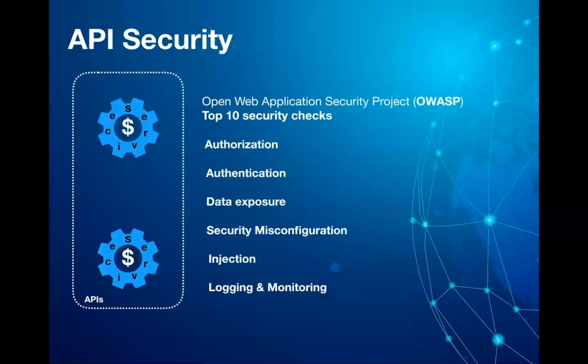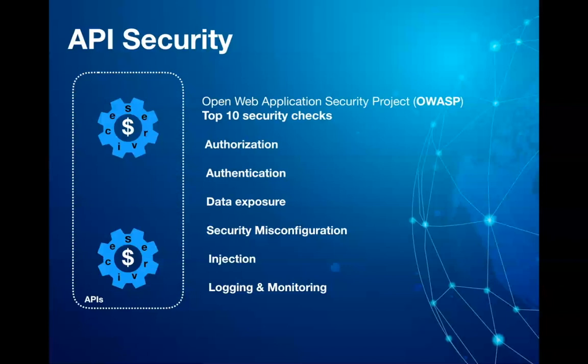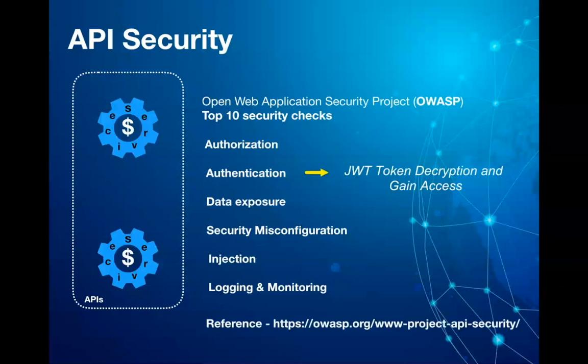For instance, if you have used a password as digits, or you are sending a customer name in URL parameters, this qualifies as a security misconfiguration. Similarly, if the JWT authorization token can be decrypted and contains user information which can be used to log into the system and gain access, this qualifies as a broken user authentication type.